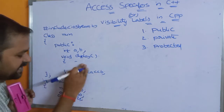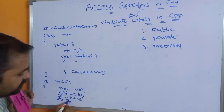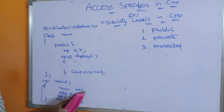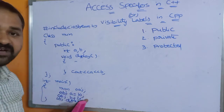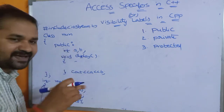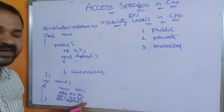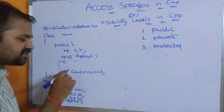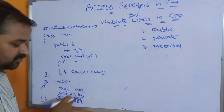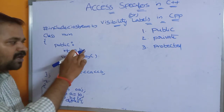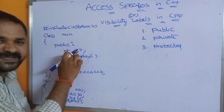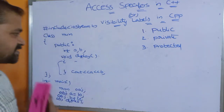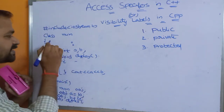If we remove the direct assignment statements and instead call obj.display after setting obj.a = 10 and obj.b = 20, then inside a the value 10 is stored and inside b the value 20 is stored. When display is called, it outputs a and b, so 10 and 20 will be printed. This is because a and b are public members, accessible from the main function.